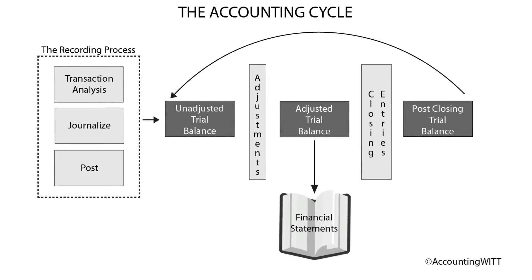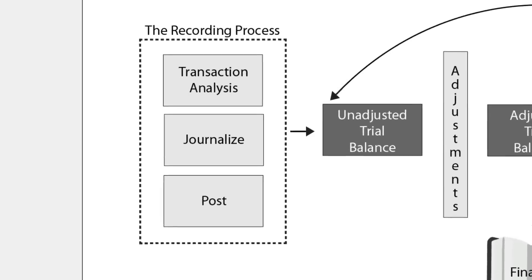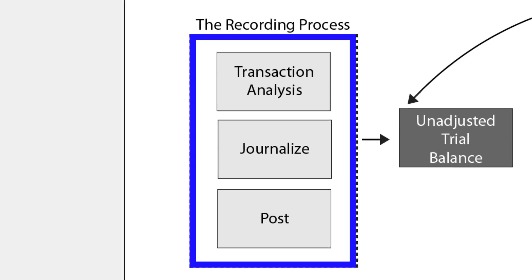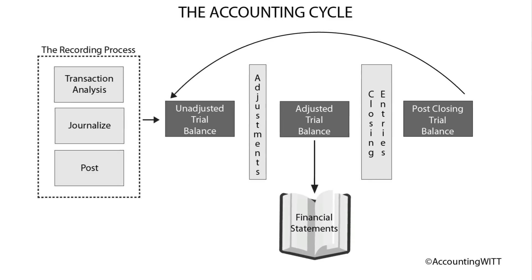There are several steps in the accounting cycle. This diagram shows what happens within the accounting cycle on a high level. The first few steps are part of what is called the recording process — the process by which all of the activity of a business is initially identified, recorded, and organized into the books of the business.